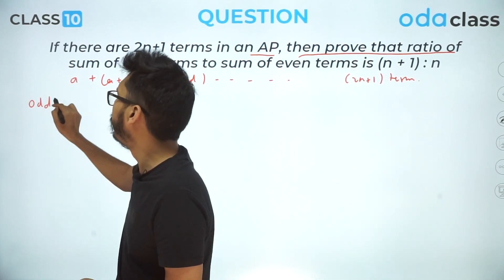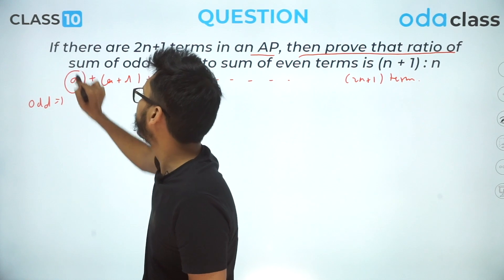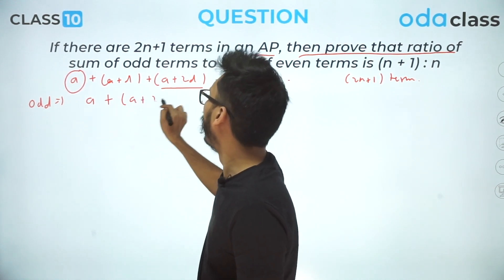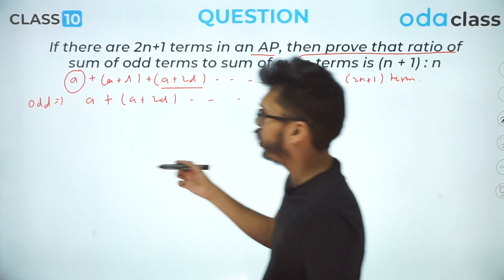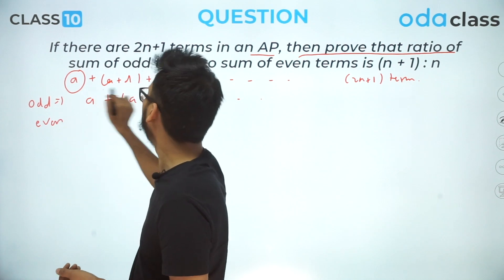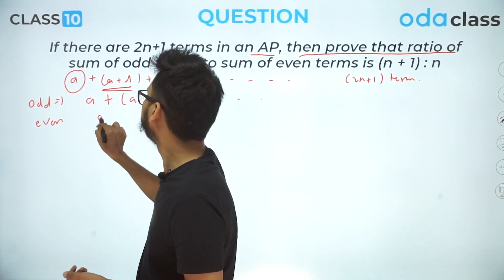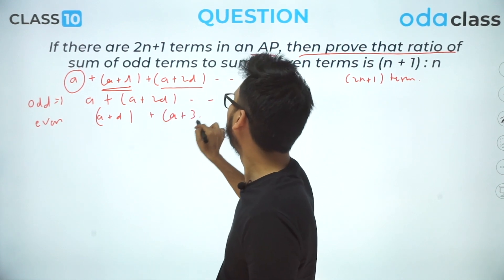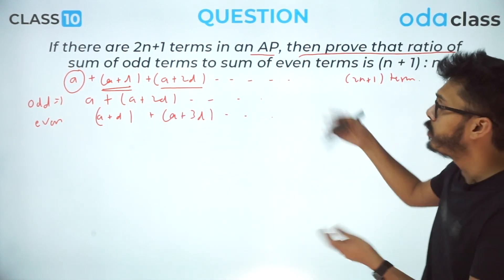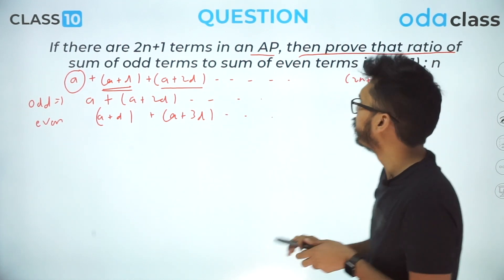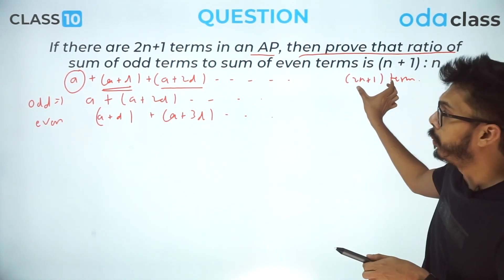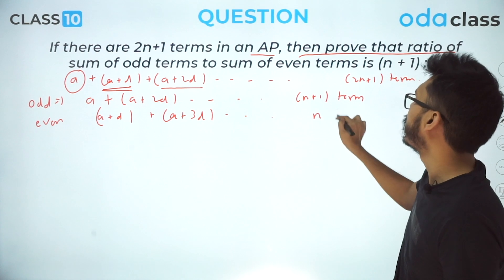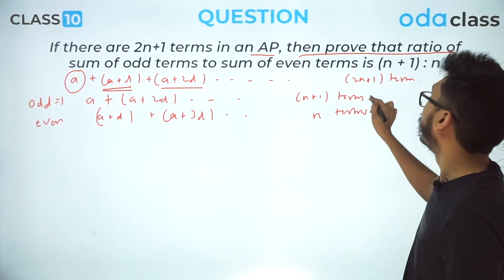We divide the AP into two parts. The odd-positioned terms form the series: a, a+2d, a+4d, … and the even-positioned terms form: a+d, a+3d, a+5d, … Since there are (2n+1) total terms, the odd series has (n+1) terms and the even series has n terms.